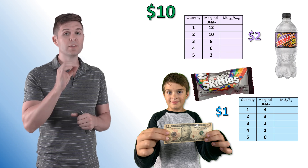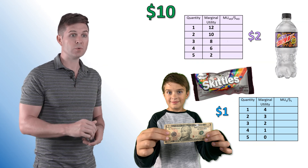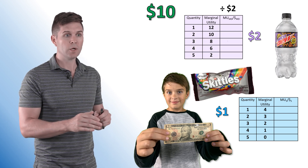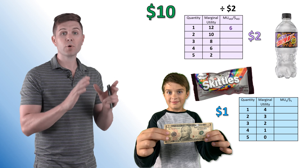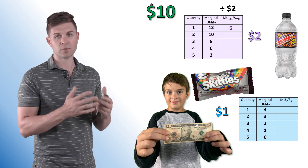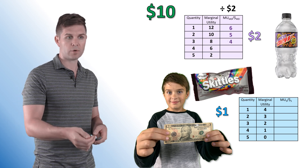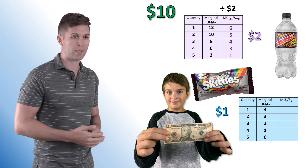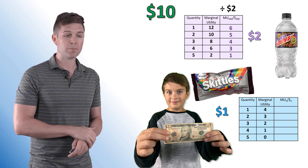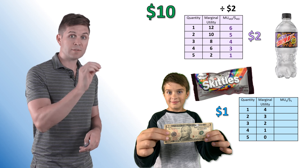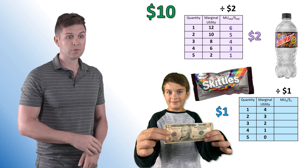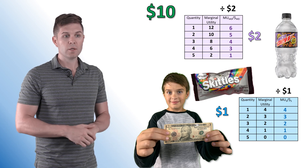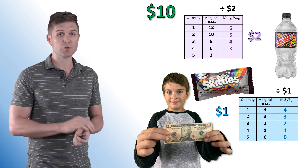We need to figure out the per dollar marginal utility. For Mountain Dew at $2 a bottle, we divide each marginal utility by two. The first bottle gives 12 units of satisfaction but only 6 per dollar. The second gives 5 per dollar, the third gives 4, the fourth gives 3, and the last gives 2 units total, so only 1 per dollar. For Skittles at $1 each, we divide by one, so 4, 3, 2, 1, and 0 utils per dollar respectively.